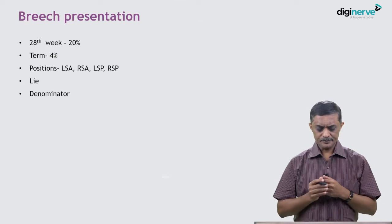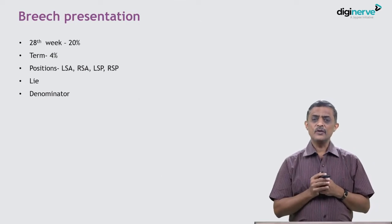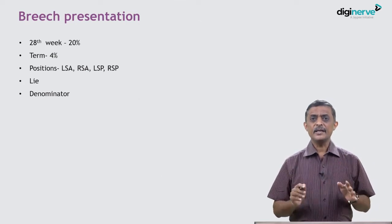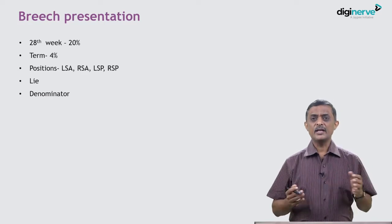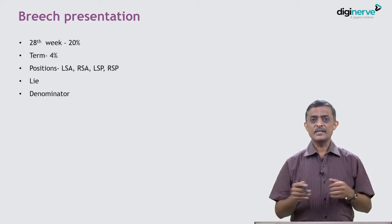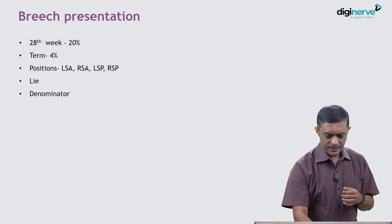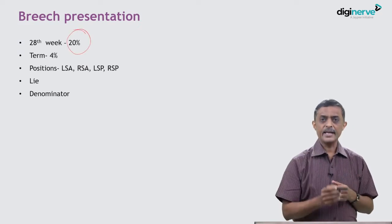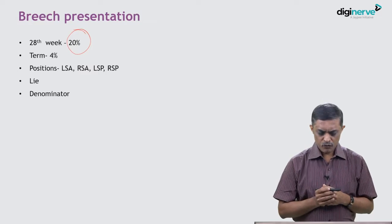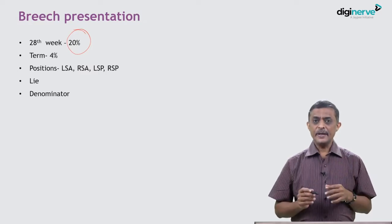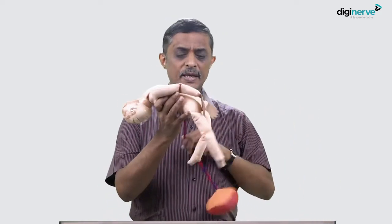Looking at the incidence: prematurity is the commonest cause for breech. At 28 weeks, if you examine all pregnant mothers, 20 percent can have breech presentation, whereas at term it comes down to about four percent.